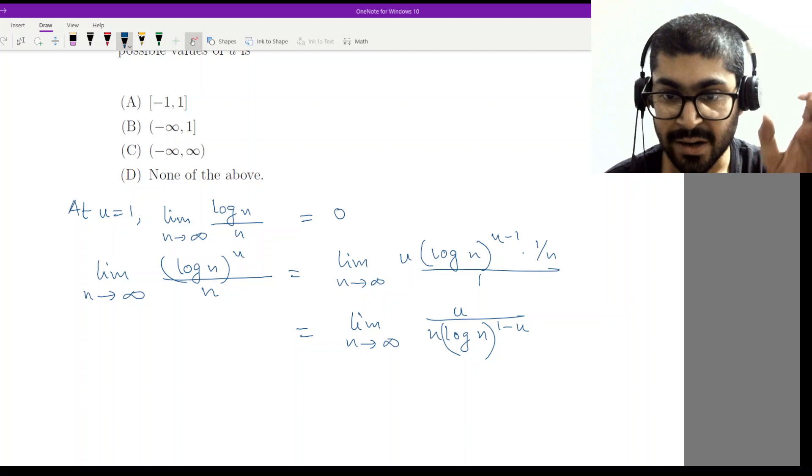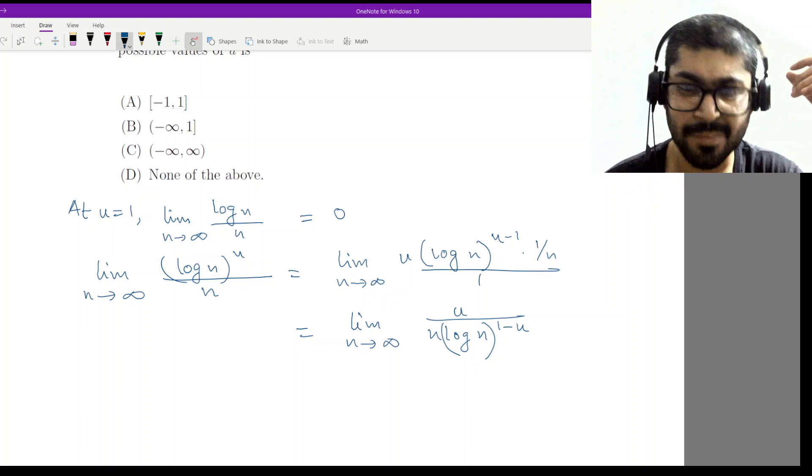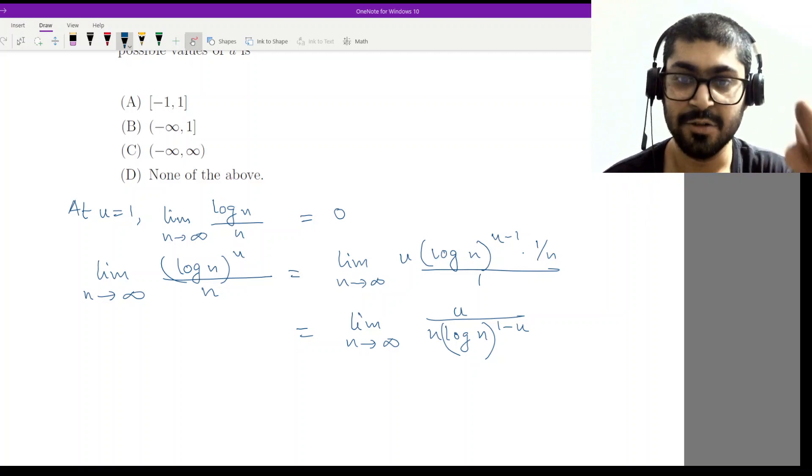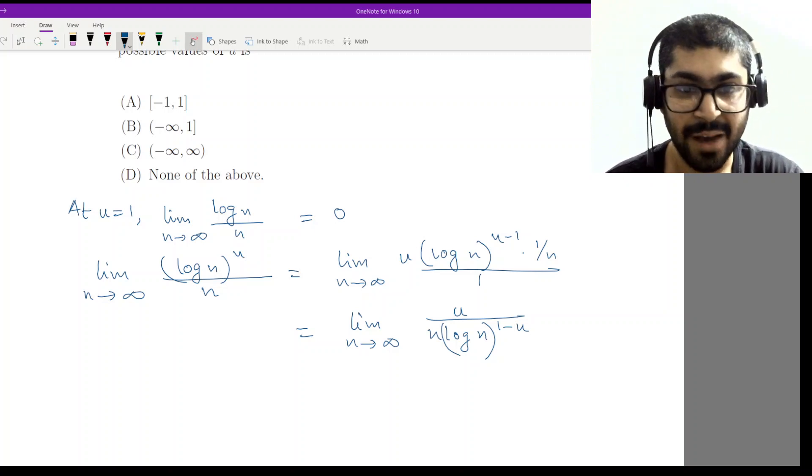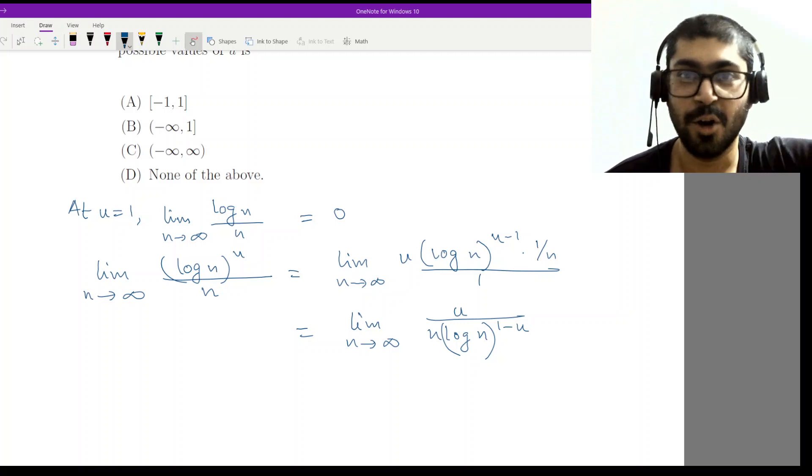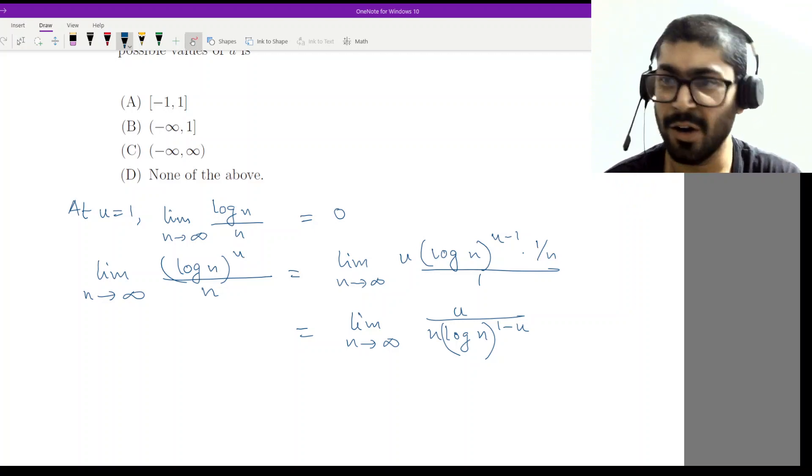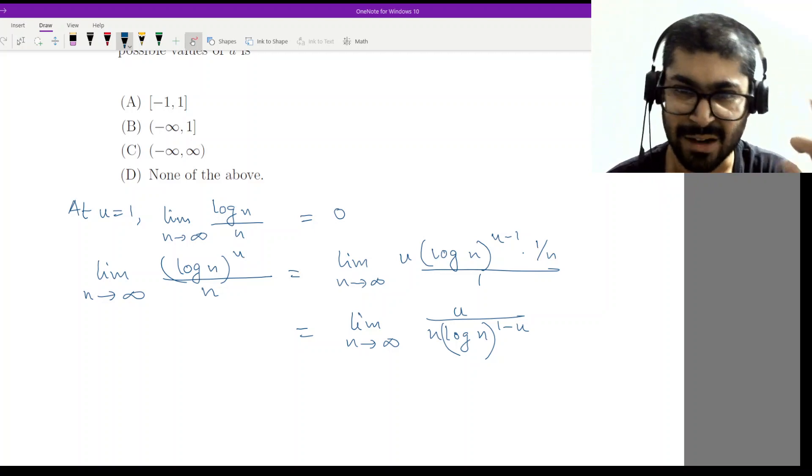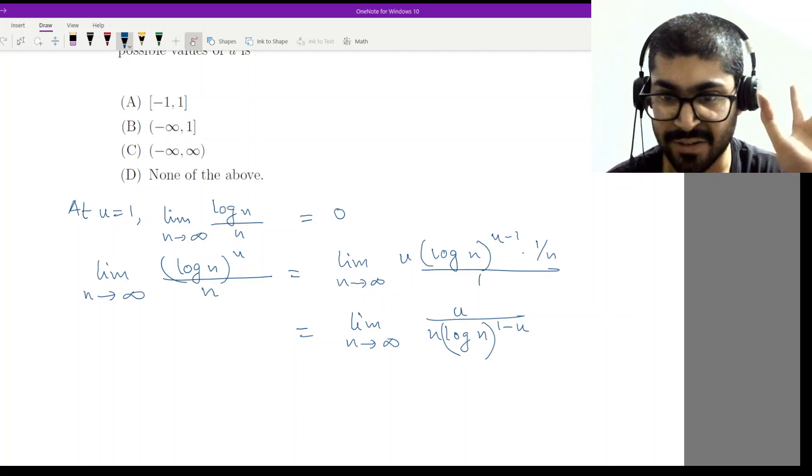Now if you look at the denominator, we want this limit to converge to any finite non-zero constant because the zero case has already been discussed at u equals to 1. For this to happen, the denominator should grow faster than the numerator. Because if we are going towards infinity, the bottom should be heavier, so that will pull down the value of the entire thing to 0 or whichever value that converges to. The denominator should be larger than the numerator for the convergence to occur.